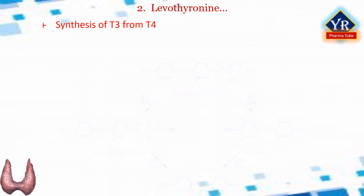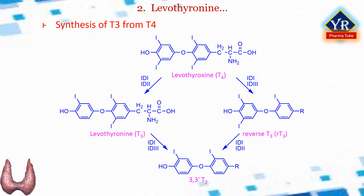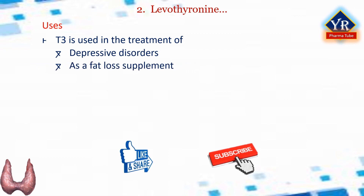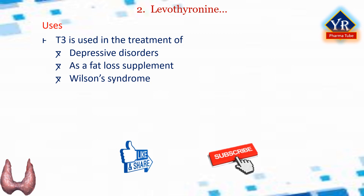Synthesis of levothyronine (T3). T3 is the more metabolically active hormone produced from T4. T4 is deiodinated by three deiodinase enzymes to produce the more active triiodothyronine (T3), during which an iodine atom at the outer ring is eliminated. This reaction is known as the deiodination reaction. Synthesis of reverse T3 and T2 are also shown. T3 is used in the treatment of depressive disorders and as a fat loss supplement. It has been used to treat Wilson's syndrome, an alternative medical diagnosis not recognized as a medical condition by mainstream medicine.